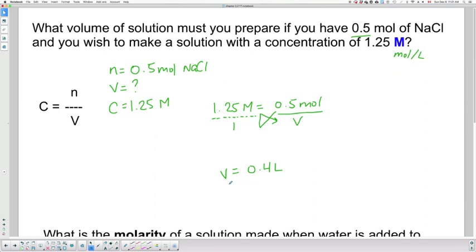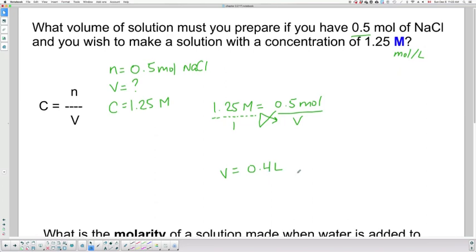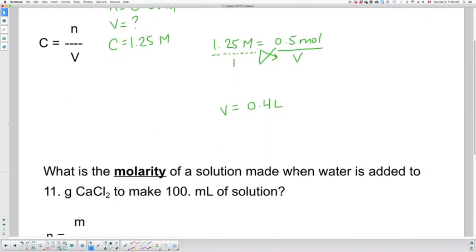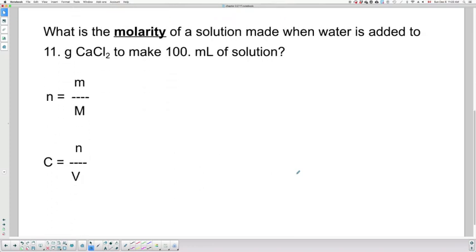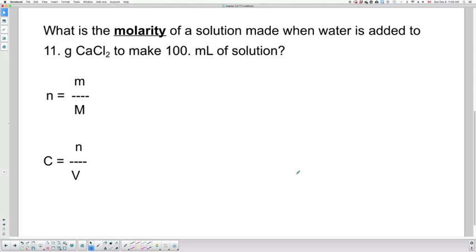So final answer, volume 400 ml or 0.4 liters. Now let's take a look at a second problem, slightly more complex. What is the molarity? So here we're asked to find the concentration in moles per liter of a solution made when water is added to 11 grams of CaCl2 to make 100 ml of solution.